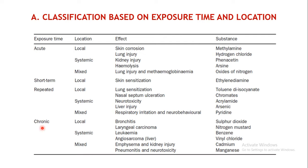The next class is chronic, where the organism is continuously exposed to a particular toxicant for a prolonged period of time. Again, depending upon location, it may be local, systemic, or mixed toxicity. For local effects, bronchitis may be produced by sulfur dioxide, and laryngeal carcinoma by nitrogen mustard. Under systemic toxicity, this includes leukemia by benzene or angiosarcoma by vinyl chloride. Mixed toxicity includes emphysema and kidney injury due to cadmium, and pneumonitis and neurotoxicity due to manganese.